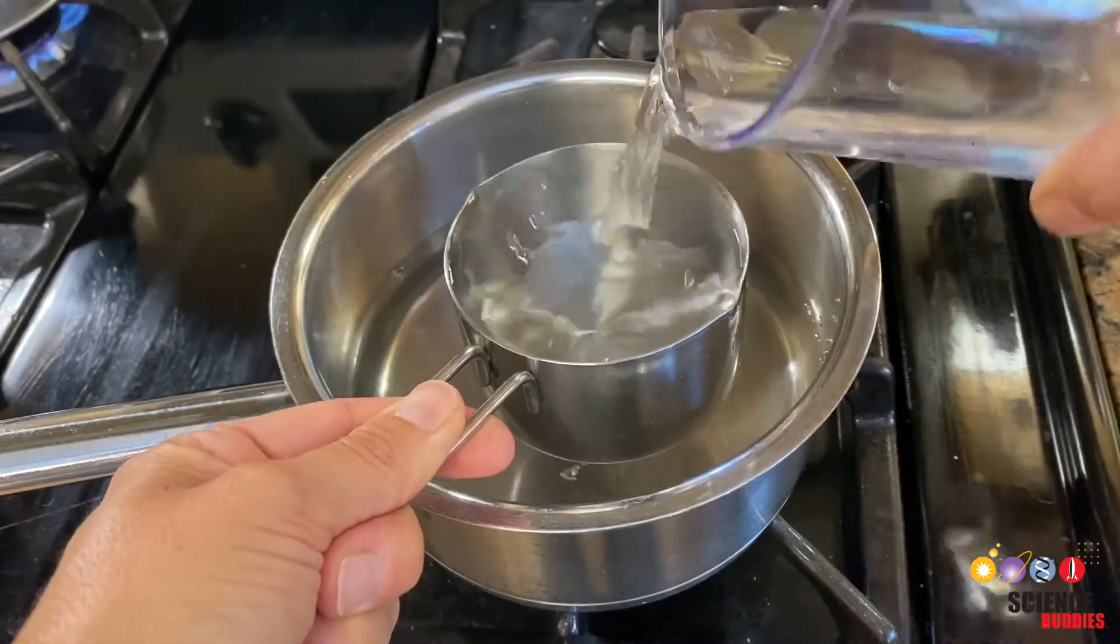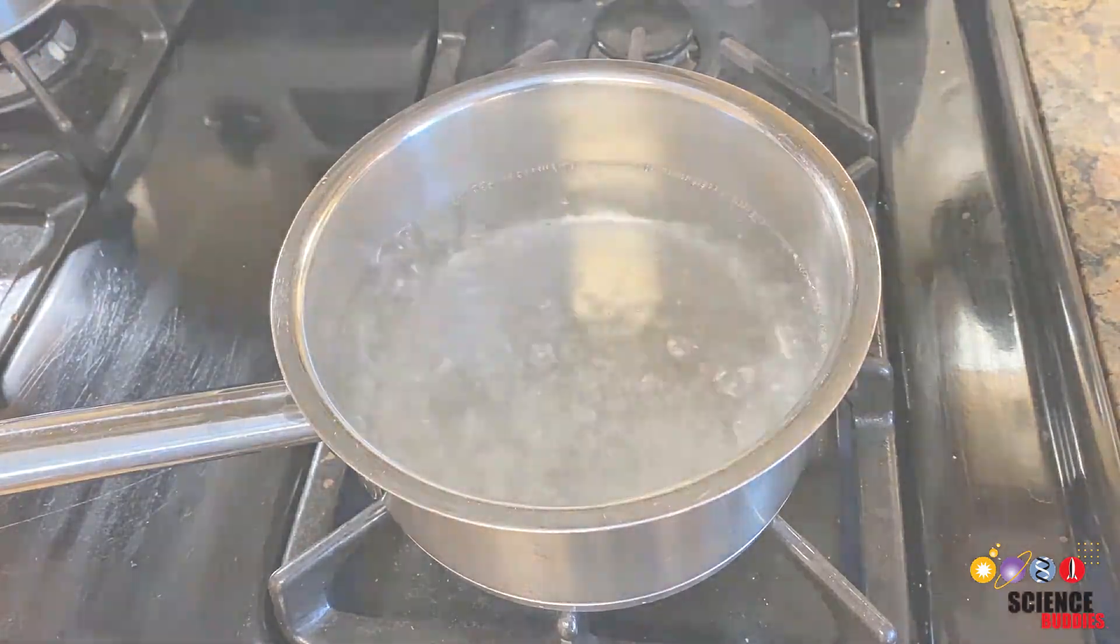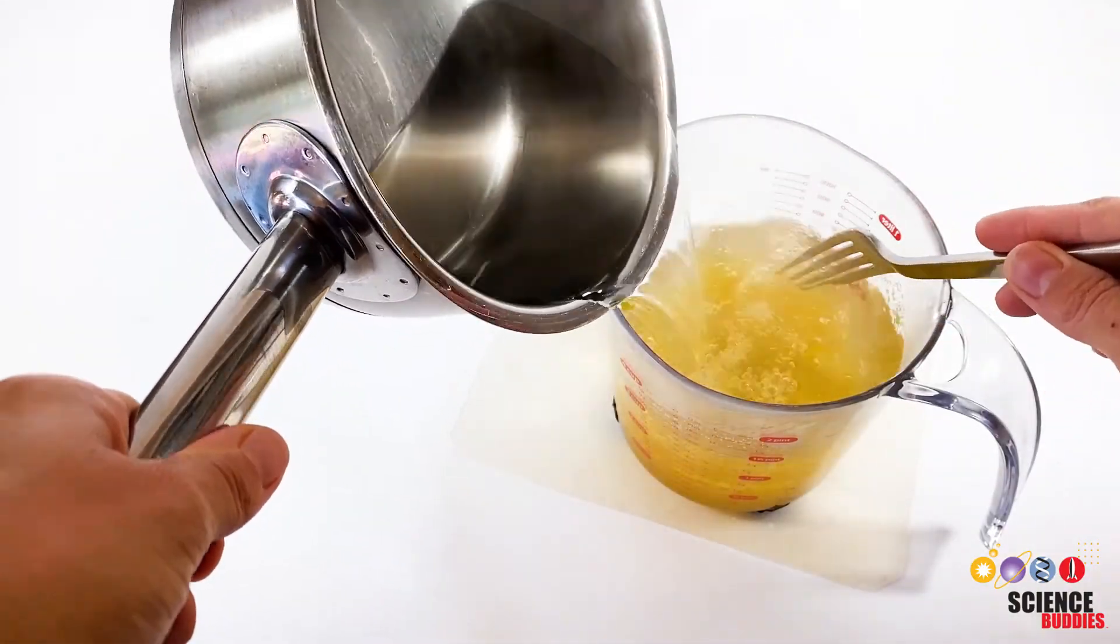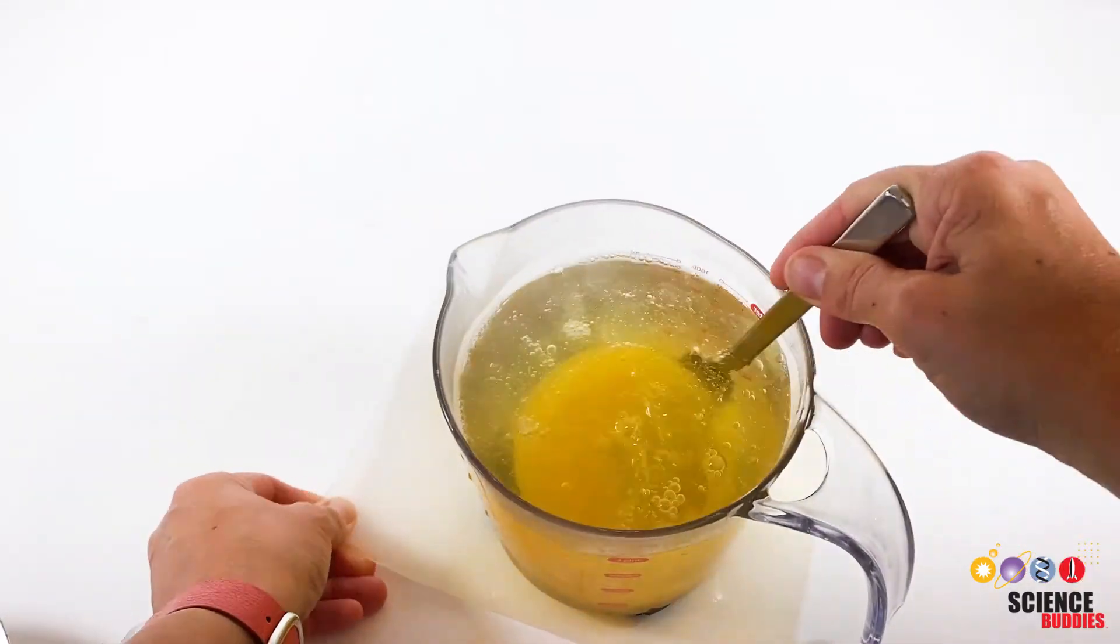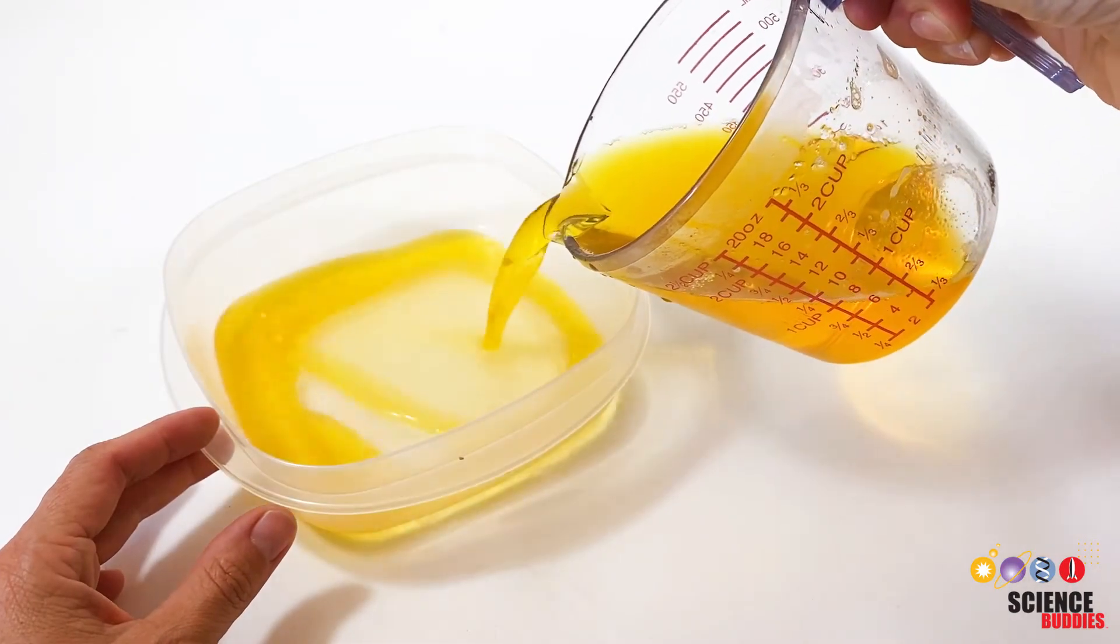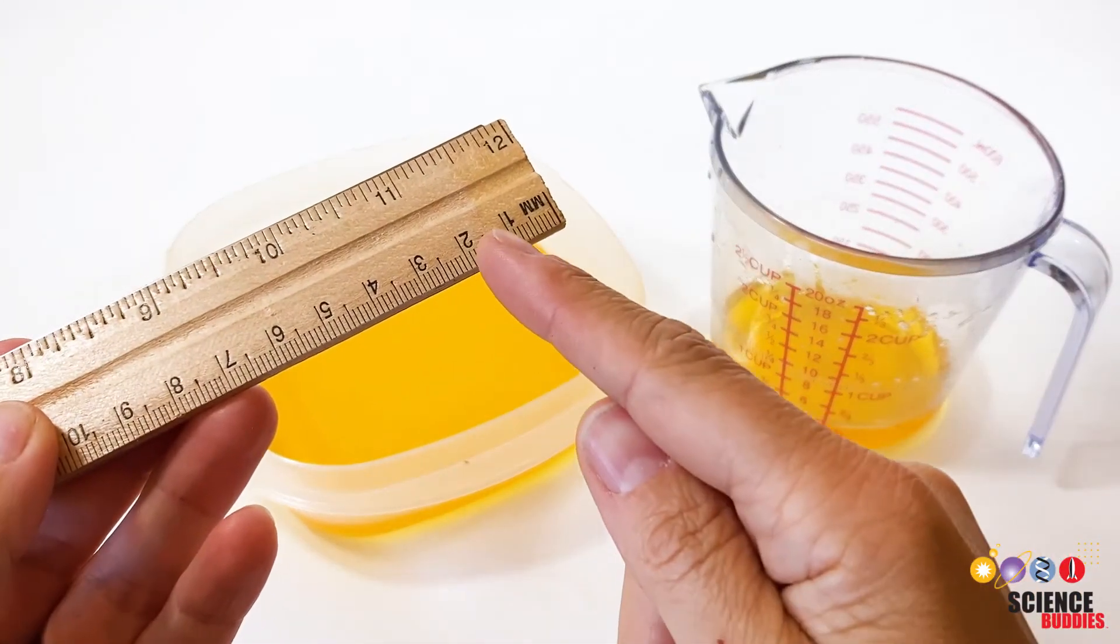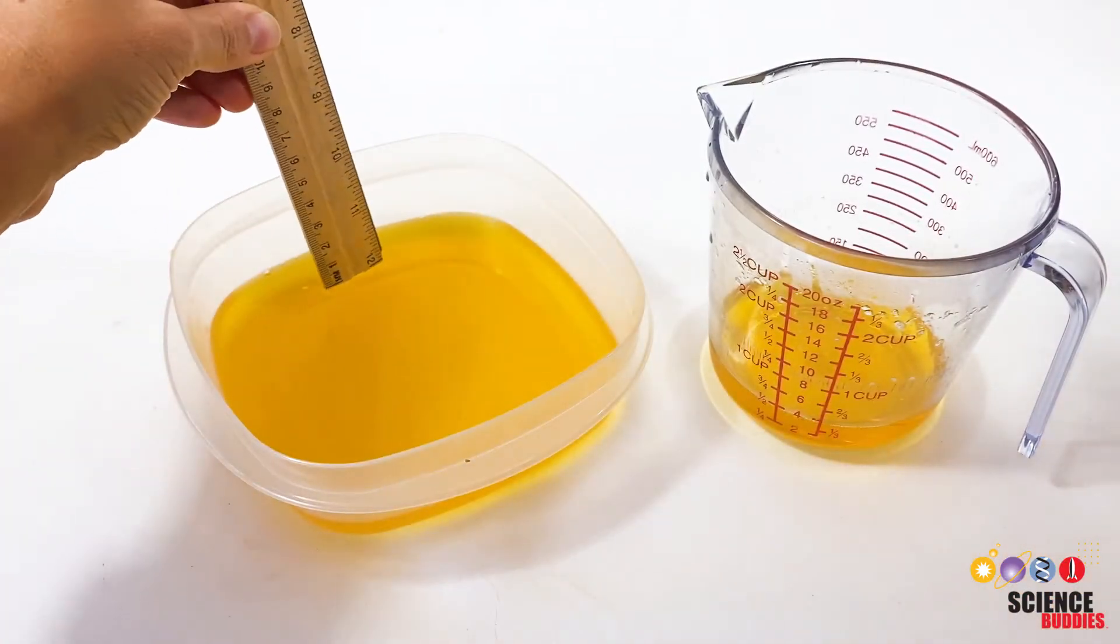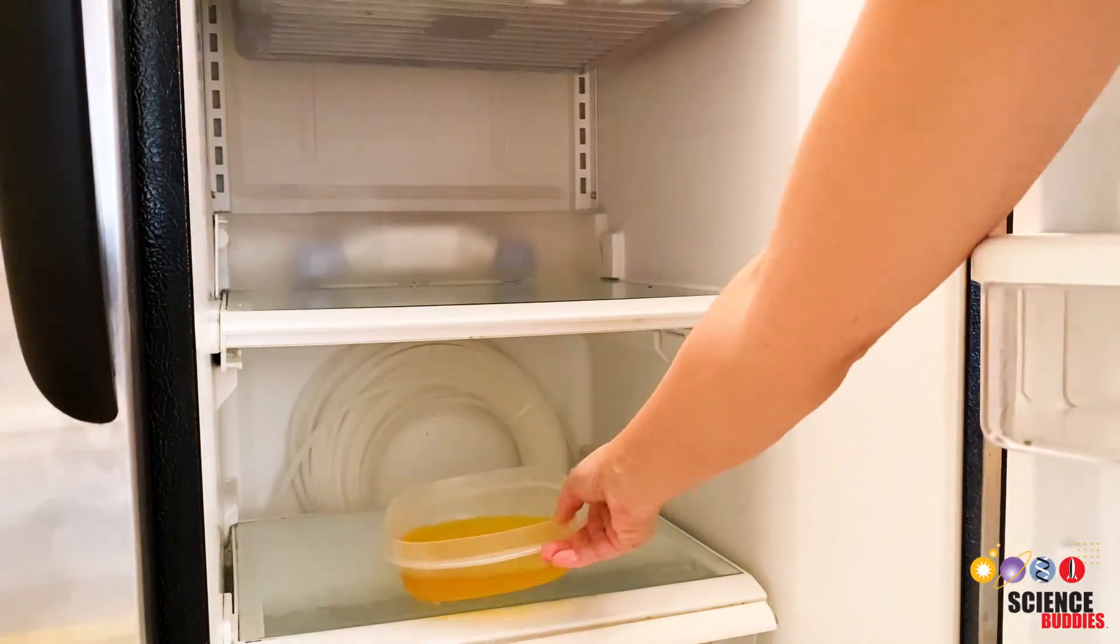While waiting, heat 3 cups of water until boiling. Add the hot water to the dissolved jello and stir until all the gelatin is dissolved. Pour the hot liquid evenly into the pans. The jello should be about 1 to 1.5 centimeters high in both pans. Then chill the jello until it is firm.